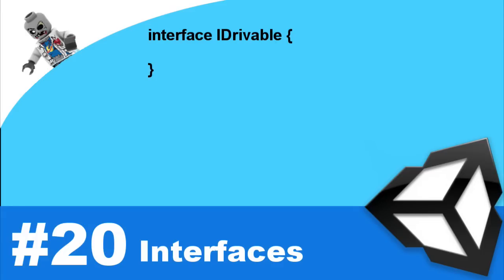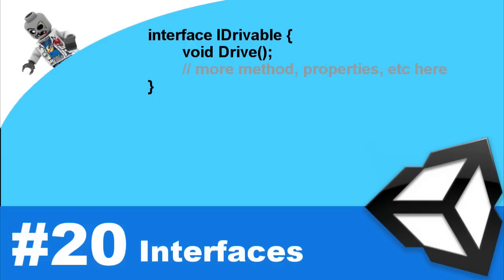Inside of the curly braces, this is where you define your actual methods and properties. You simply put the method signatures, meaning you put the beginning of the method but omit the curly braces. These methods are what the implementers of this interface will have to put in their class or struct. So here, we're going to create a simple one called drive — it's going to be void drive, with open and closed parentheses followed by a semicolon. When you've placed all your methods in here, you close it off with a curly brace.